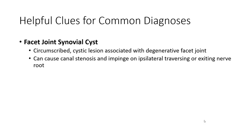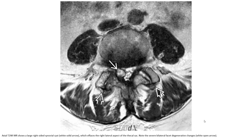Facet joint synovial cystic lesion associated with degenerative facet joint can cause canal stenosis and impingement on the ipsilateral traversing or exiting nerve root. Axial T2WI MRI shows a large right-sided synovial cyst indicated by the slip arrow, which affects the right lateral aspect of the thecal sac. Note the severe bilateral facet degenerative changes.